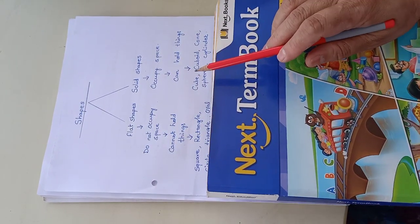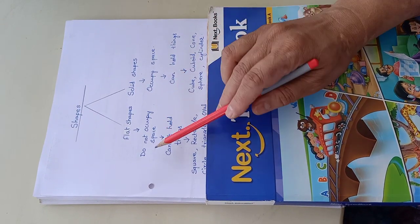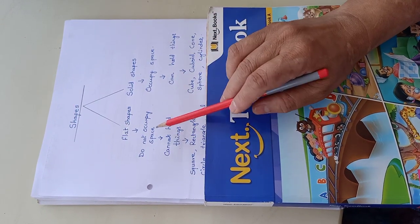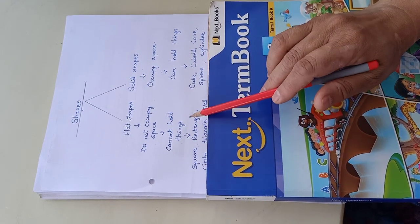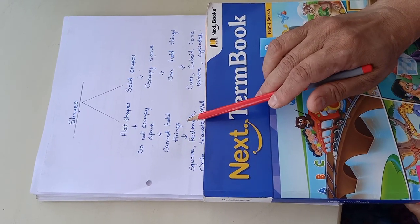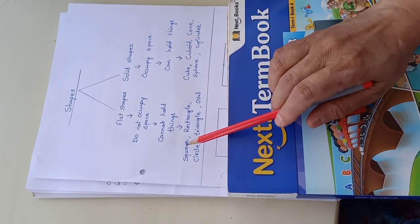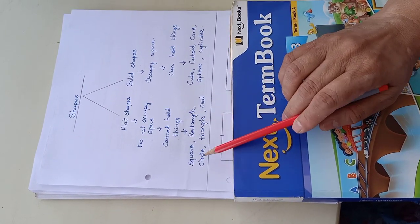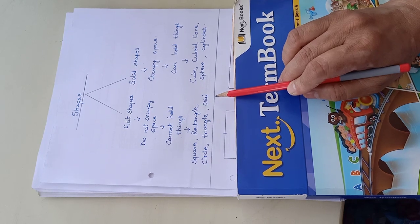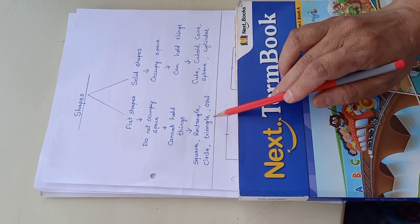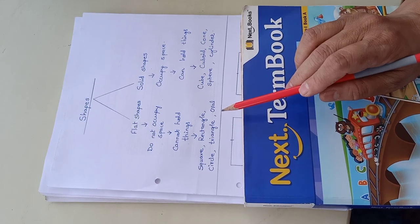What are flat shapes? Flat shapes are those which do not occupy space or they cannot hold things in them. Examples: square, rectangle, circle, triangle, oval. These are the examples which you can find them easily in their surroundings.